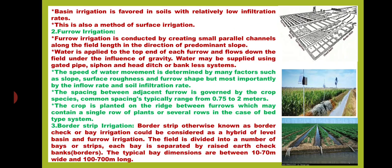The second method is furrow irrigation. Furrow irrigation is conducted by creating small parallel channels along the field length in the direction of the predominant slope. Water is applied to the top end of each furrow and flows down the field under the influence of gravity. Water may be supplied using gated pipe, siphon and head ditch, or bankless systems. The speed of water movement is determined by many factors such as slope, surface roughness, and furrow shape, but most importantly by the furrow rate and soil infiltration rate.